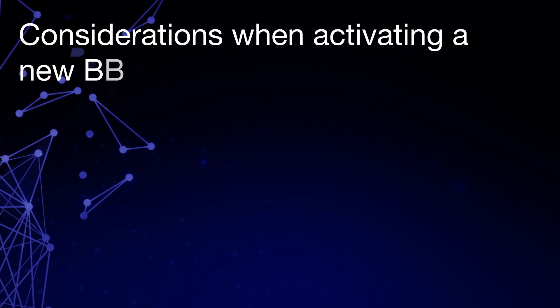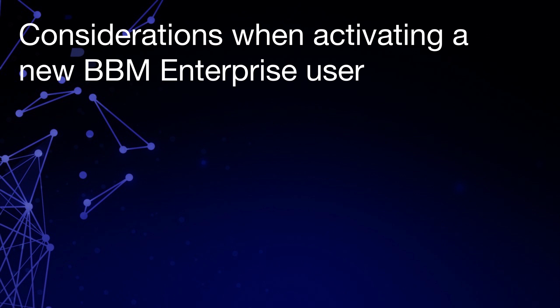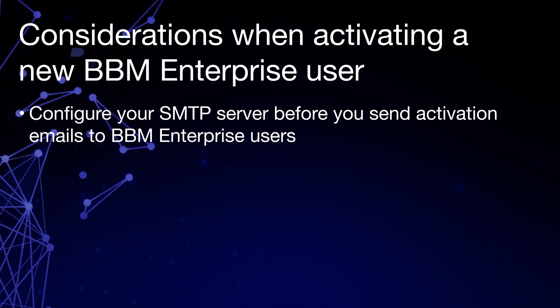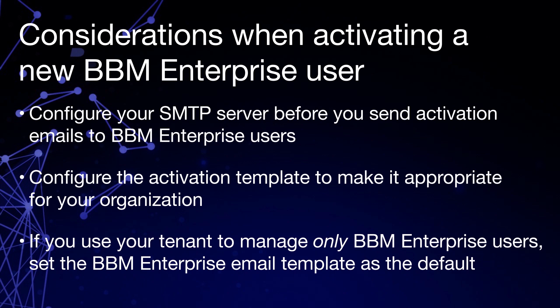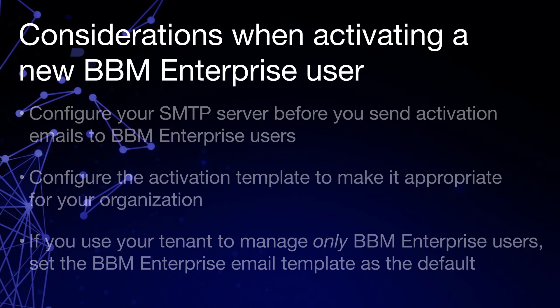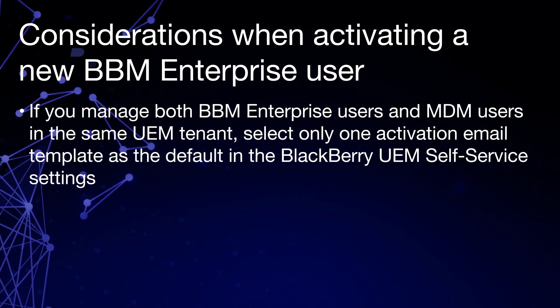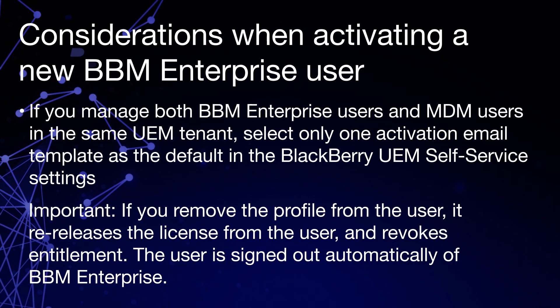The following are important considerations when activating a new BBM Enterprise user. You need to configure your SMTP server in the UEM Management Console before sending Activation Emails to BBM Enterprise users. You can configure the Activation template to make it appropriate for your organization. If you use your tenant to manage only BBM Enterprise users, set the BBM Enterprise Email Template as the default. If you manage both BBM Enterprise users and MDM users in the same UEM tenant, select only one Activation Email Template as the default. If you remove the profile from the user, it releases the license and revokes entitlement, and the user is signed out automatically of BBM Enterprise.